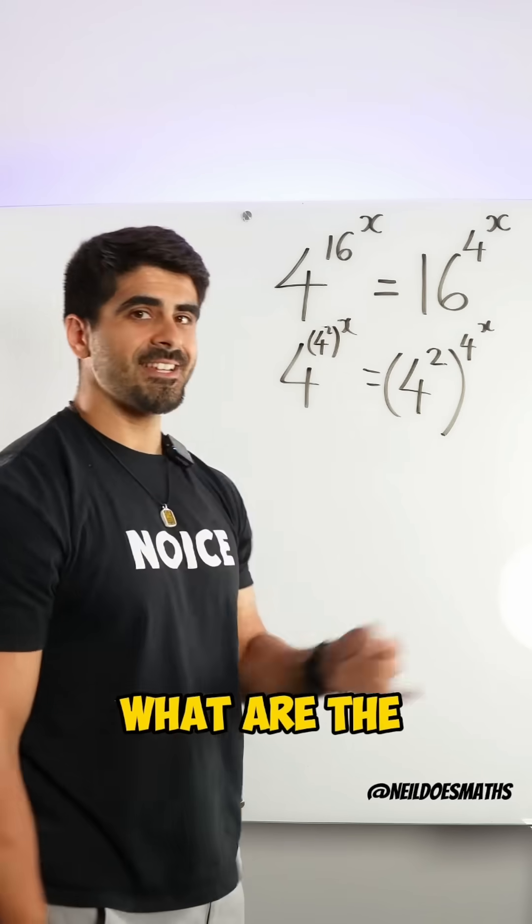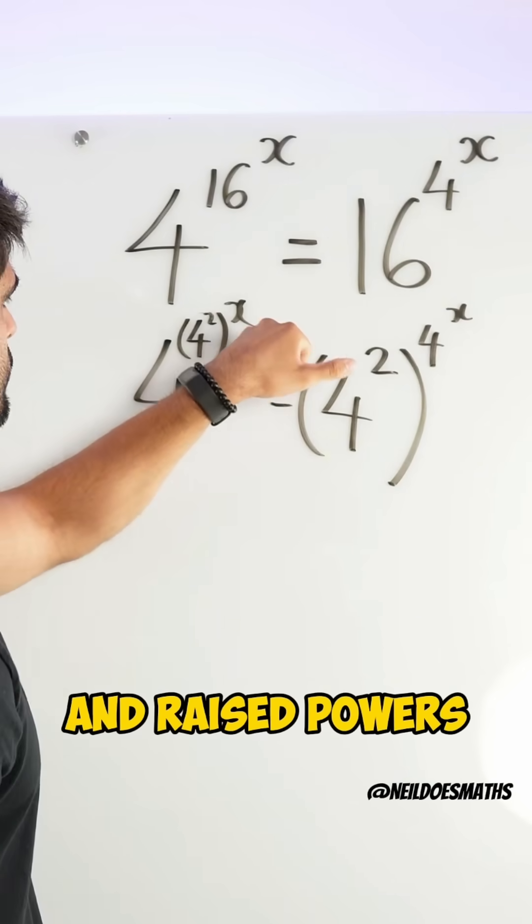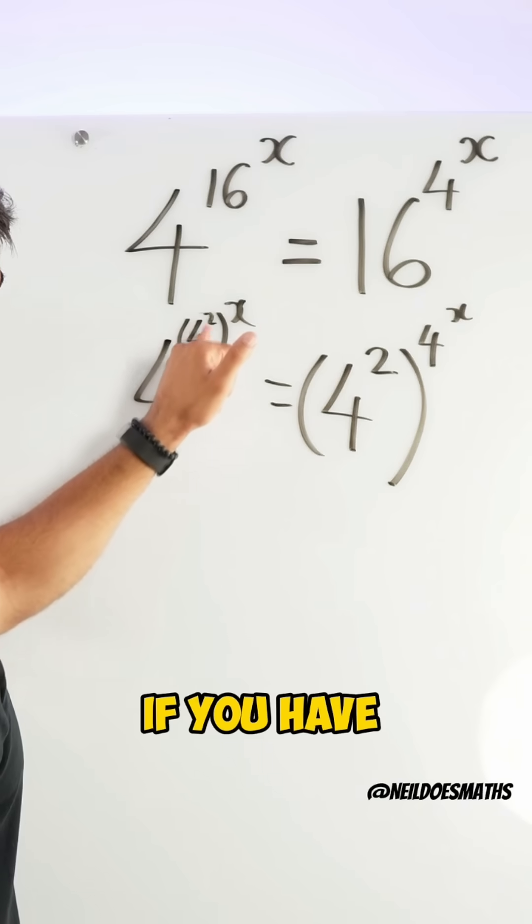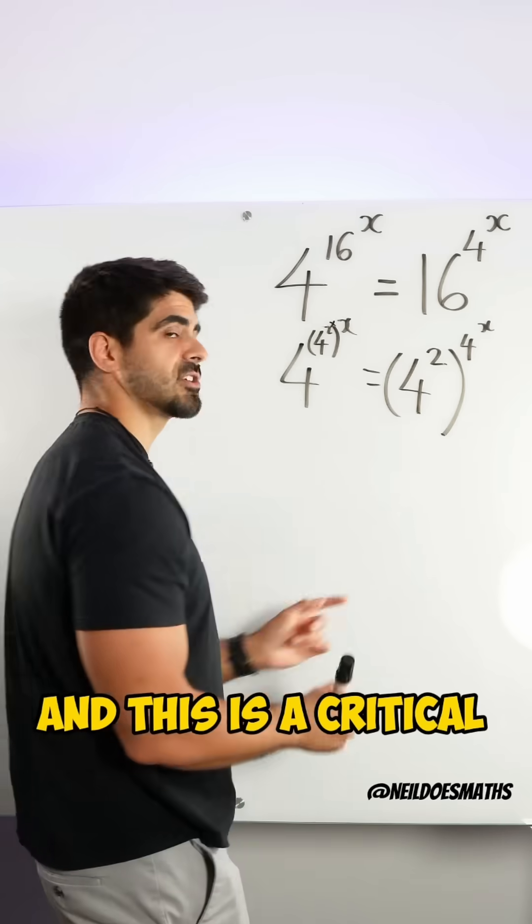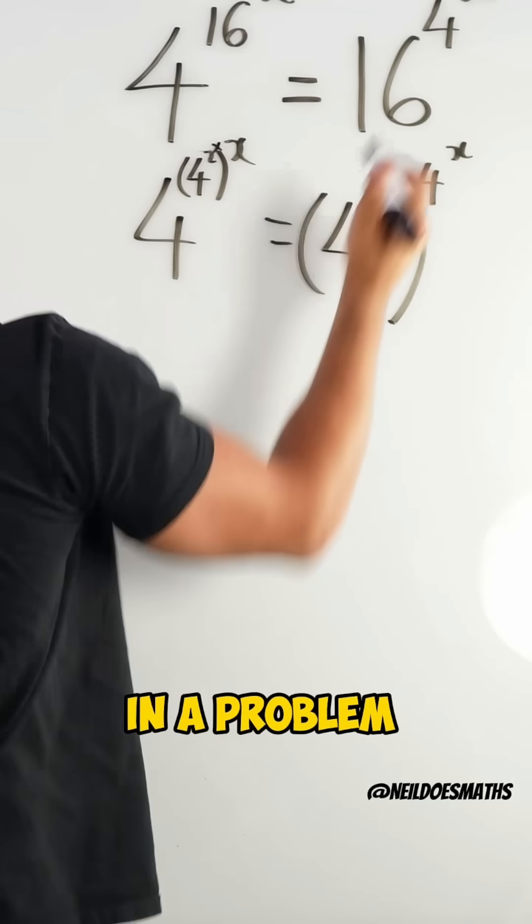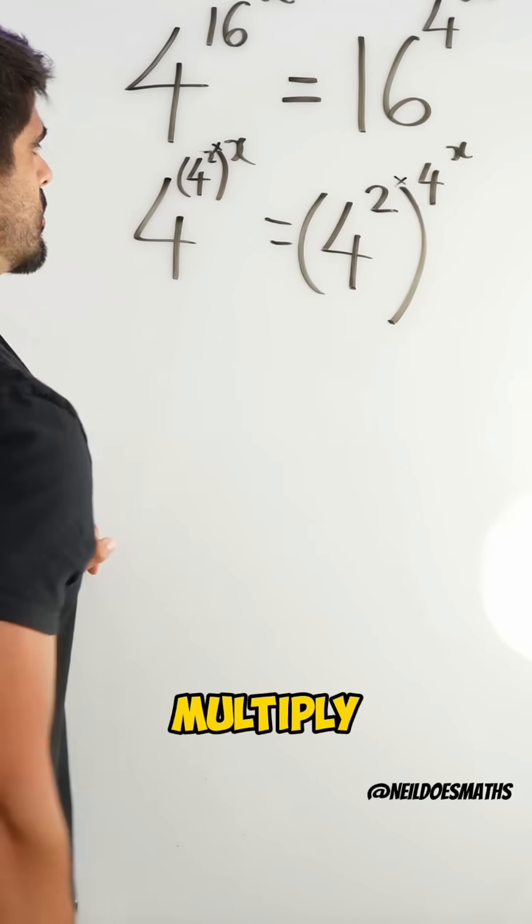Now, what are the index rules whereby we have brackets and raised powers? Well, if you have 4 squared in a bracket, raised to the power of x, you multiply the powers. And this is a critical mistake that students make in a problem like this. Here, we also multiply.